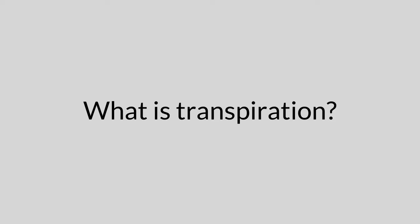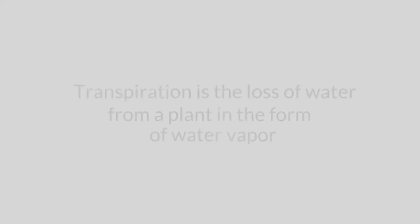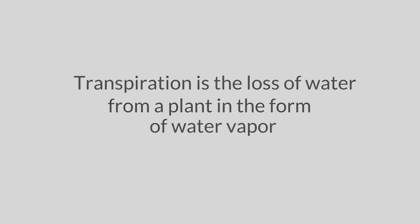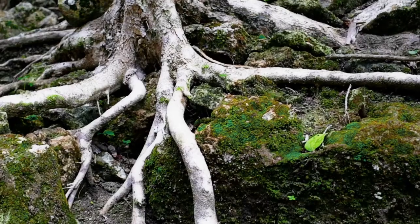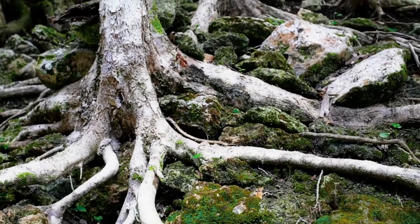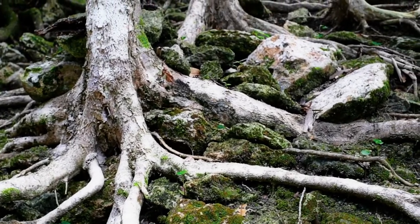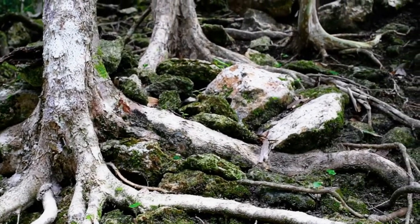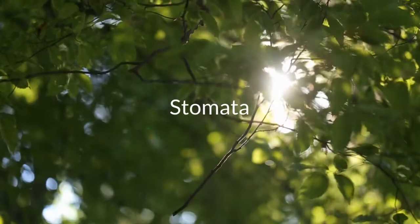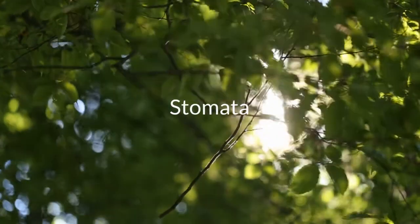What is transpiration? Transpiration is the loss of water from a plant in the form of water vapor. Water is absorbed by roots from the soil and transported as a liquid to the leaves through the xylem. In the leaves, small pores called the stomata allow water to escape as a vapor.